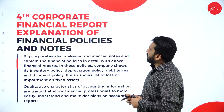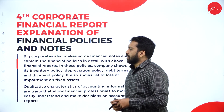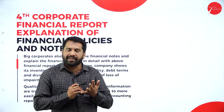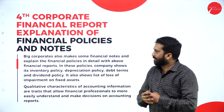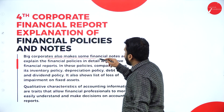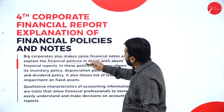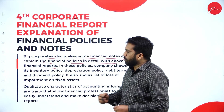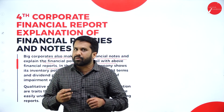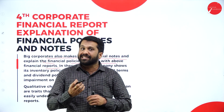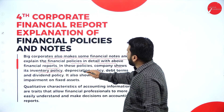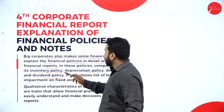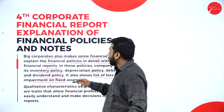Corporate Financial Reporting also includes explanation of financial policy and notes. Big corporates make financial notes and explain financial policies in detail along with the financial report. Whatever financial statement or cash flow you prepare, everything should abide by rules and regulations. In these policies, companies show their inventory policy, depreciation policy, debt terms, dividend policy, and also the list of losses and impairment on fixed assets.